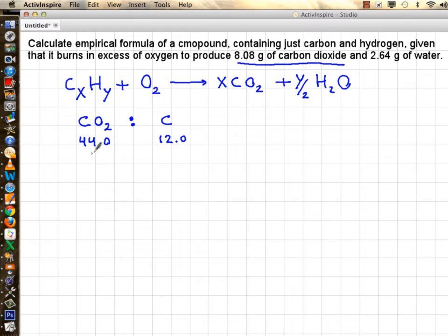If I have 8.08 grams of carbon dioxide, I should be able to solve my X based on this proportionality. Cross multiplying, 44 times X equals 8.08 times 12. Carbon is 8.08 times 12 divided by 44, which is 2.20 grams.